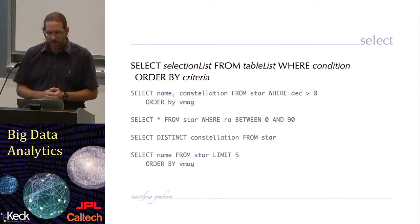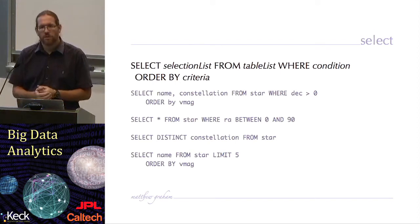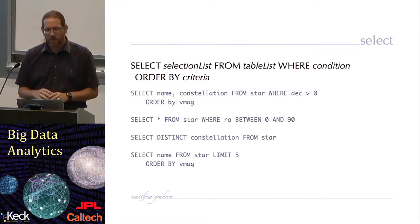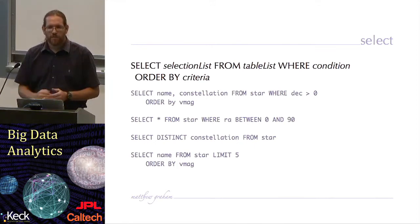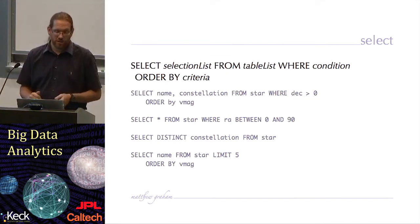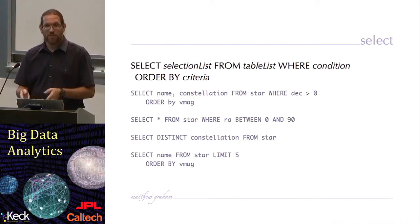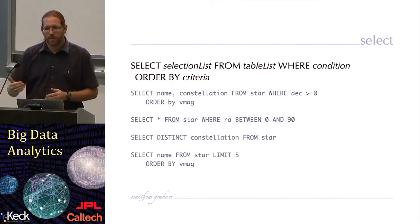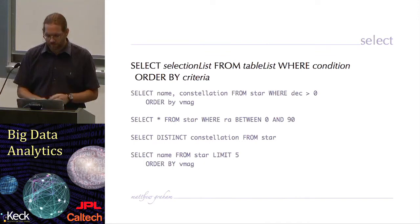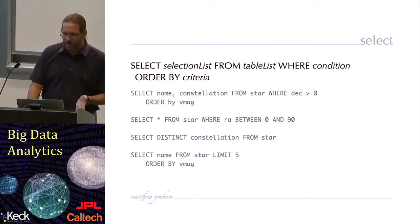In this MySQL variant syntax, if we just want the top five from a list to see the type of data that's being returned, we would do select name from star limit five, ordered by V magnitude. So that is the select statement. I would argue that 90% or probably more than that of the types of queries you will send to a database will be of this format.